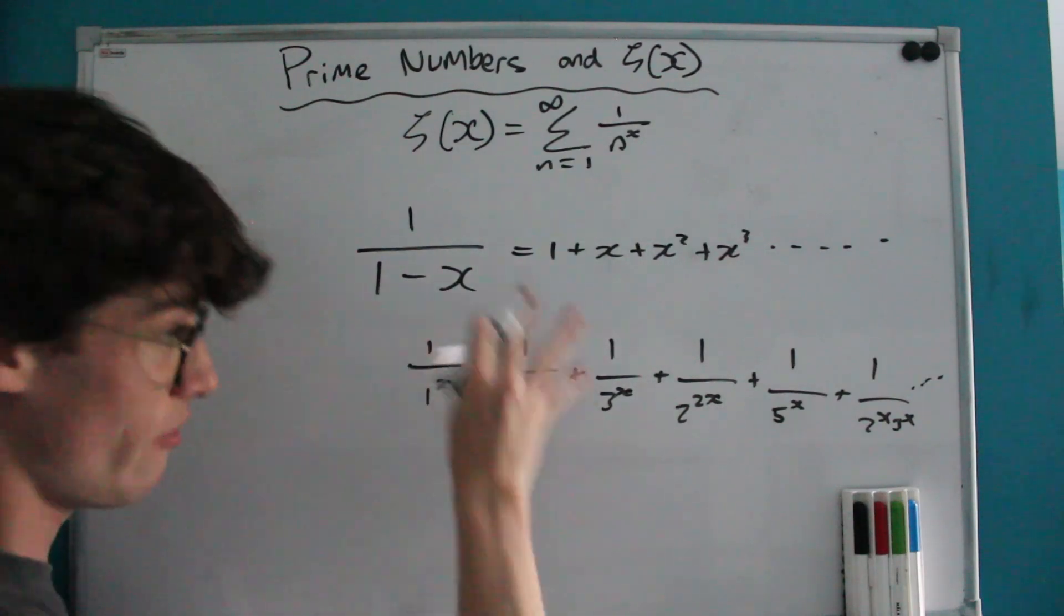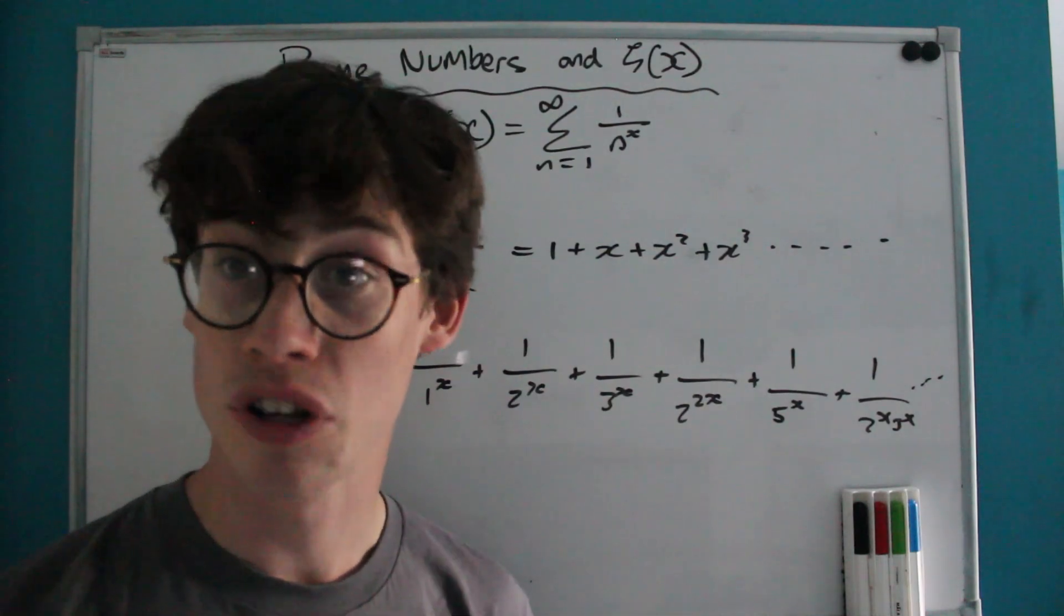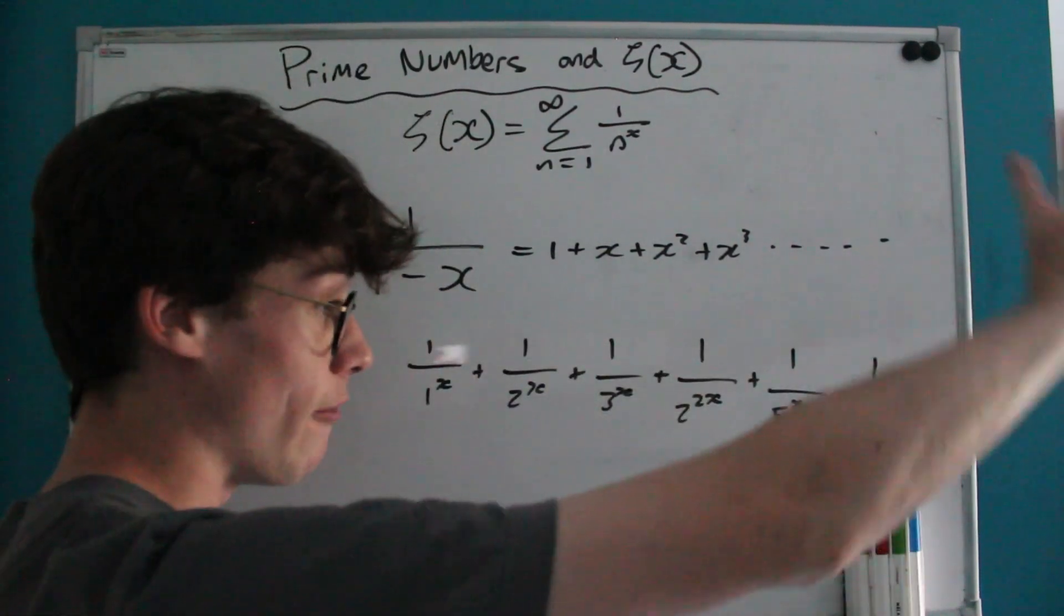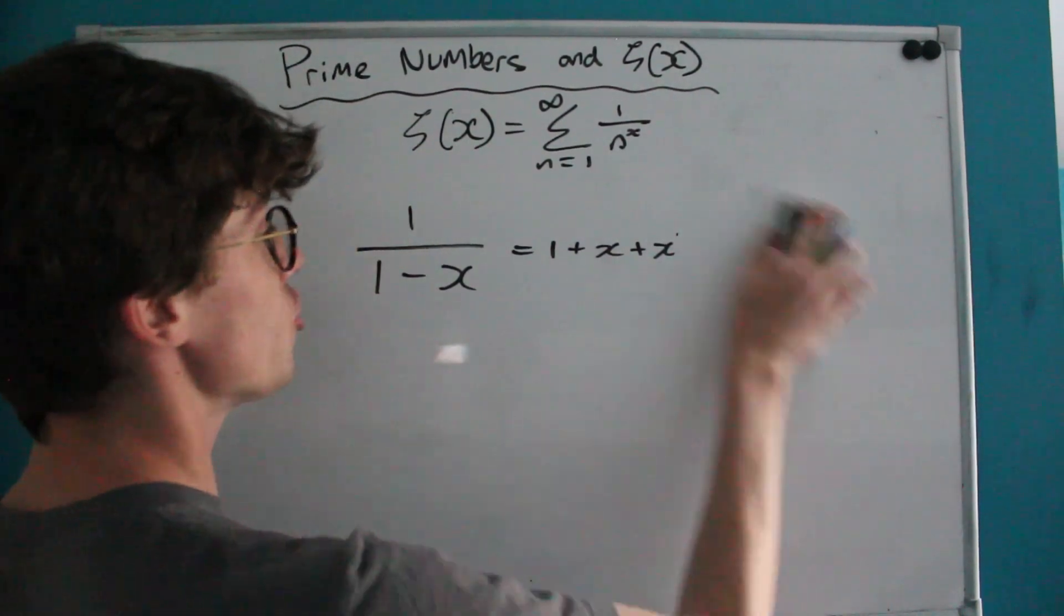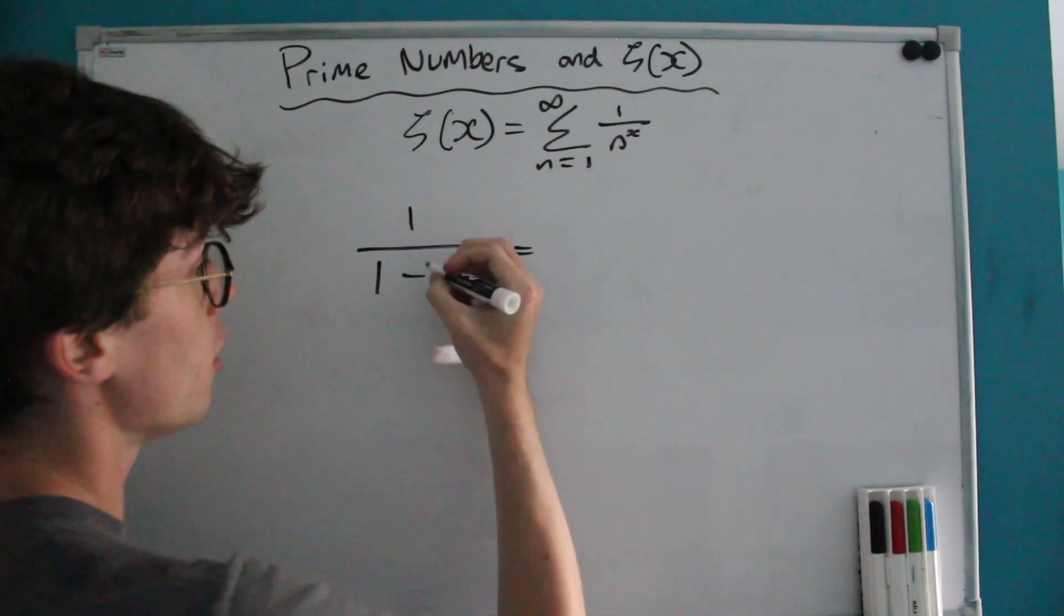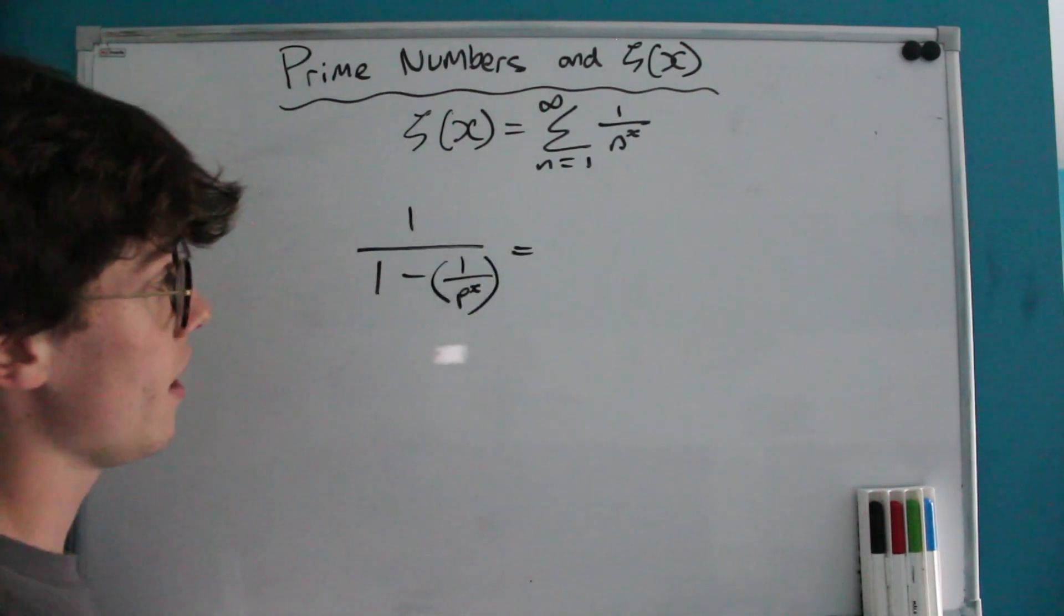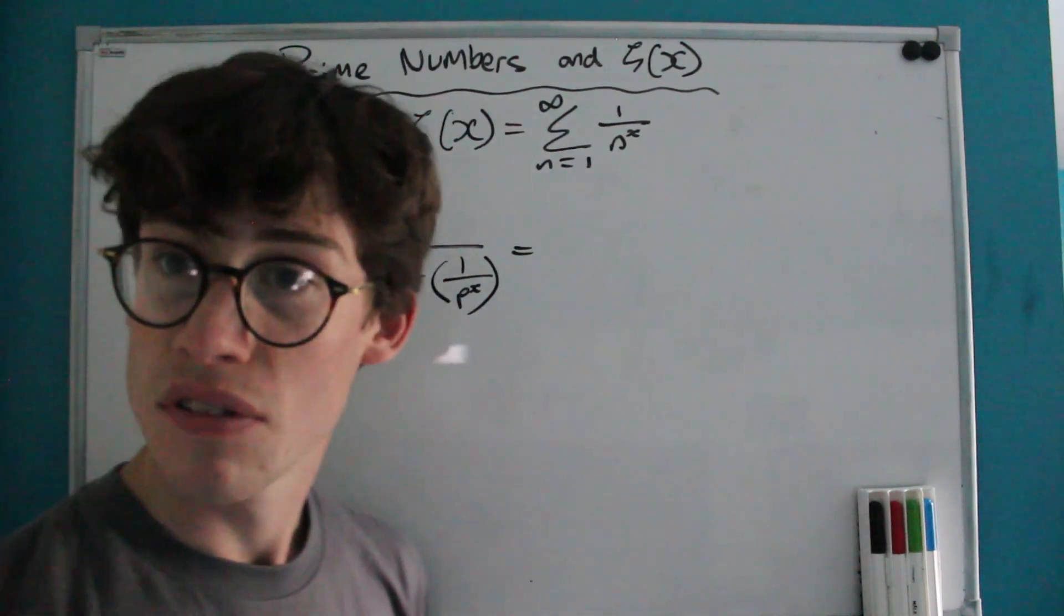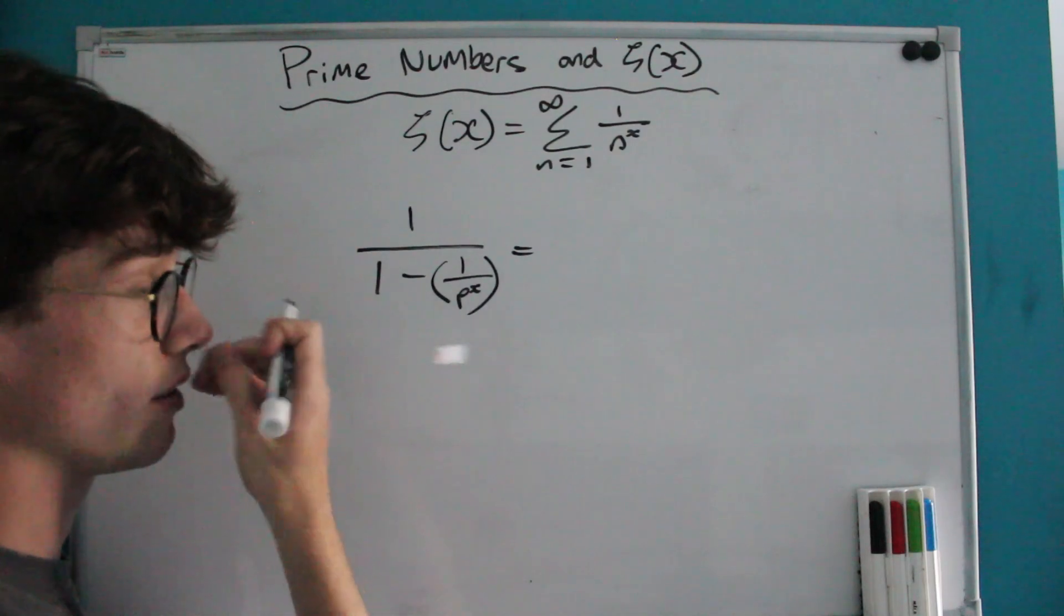It's almost as if we want to have every possible combination of prime factors that exists on the bottom of our fractions and that this would capture every number we'd want in our sequence. So why don't we change our geometric series slightly and instead of using x we're going to use 1 over p to the x. And p here denotes any prime, well actually it denotes all the primes when we move on later with our proof.